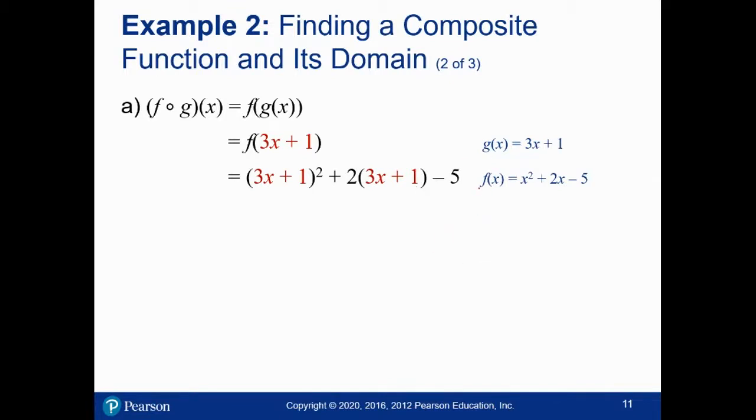Whatever the input was, f says square it, add it to 2 times the input, and subtract 5. Now our input isn't x. The input is 3x + 1. So we square that, we add 2 times it, and then we subtract 5.